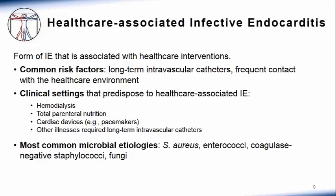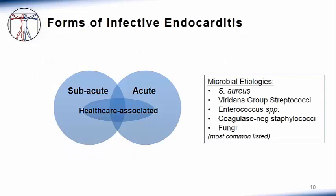Other offenders can be enterococci, streptococci, and fungi. It is important to remember that with each of the potential microbial etiologies for endocarditis, there is overlap between subacute and acute infective endocarditis.